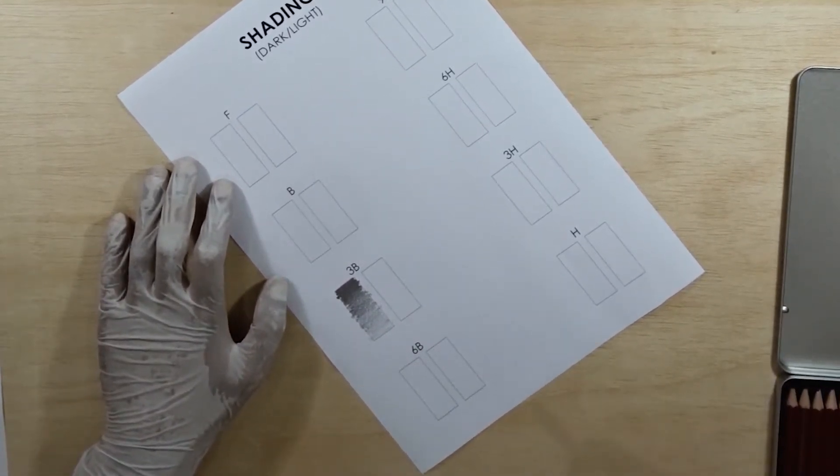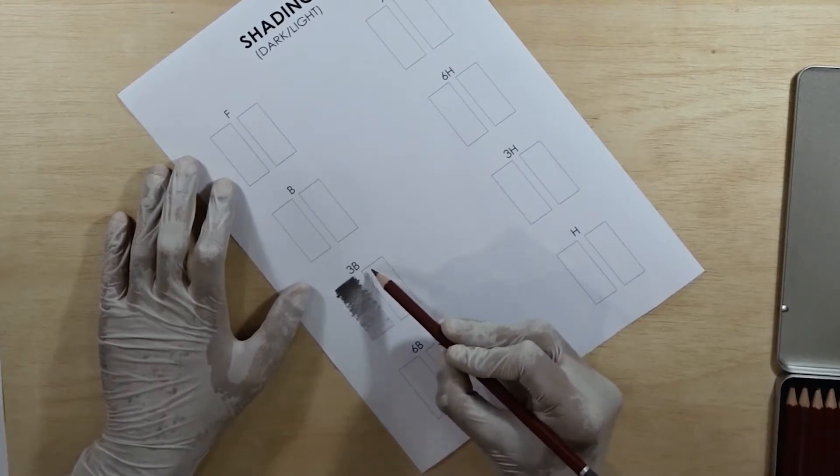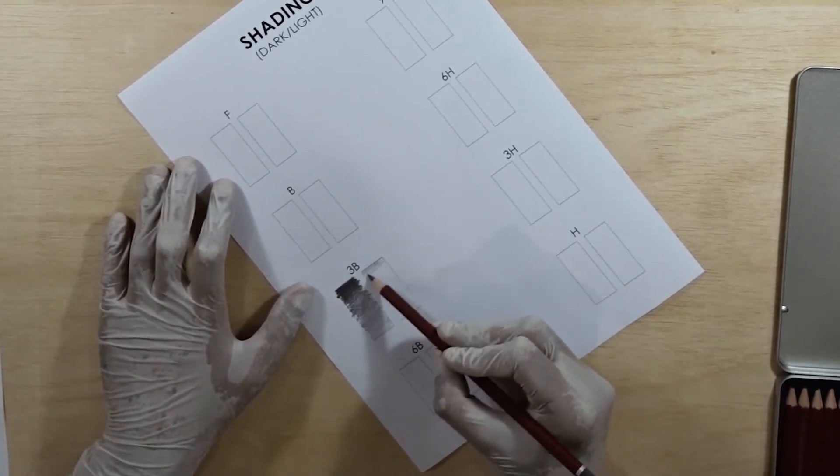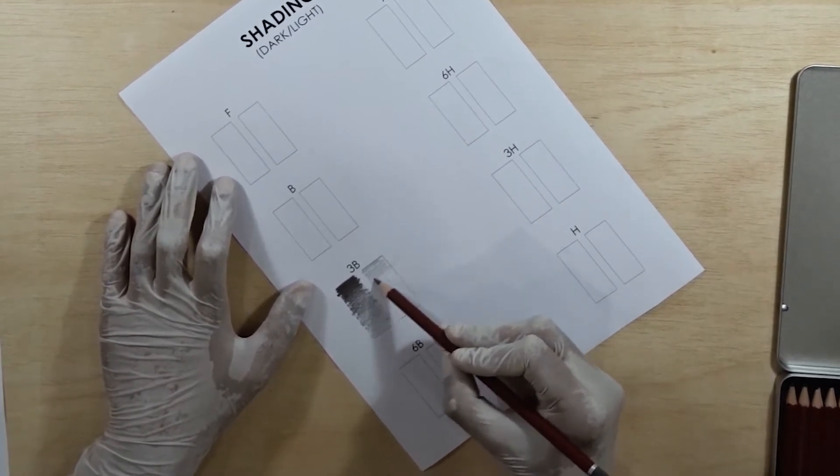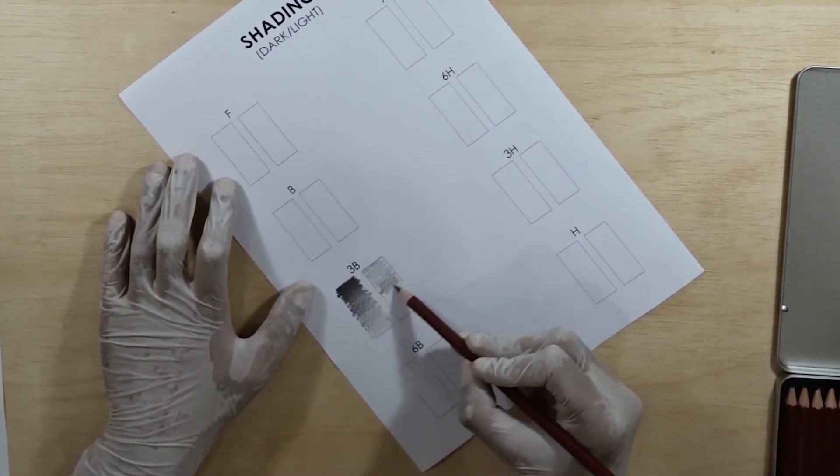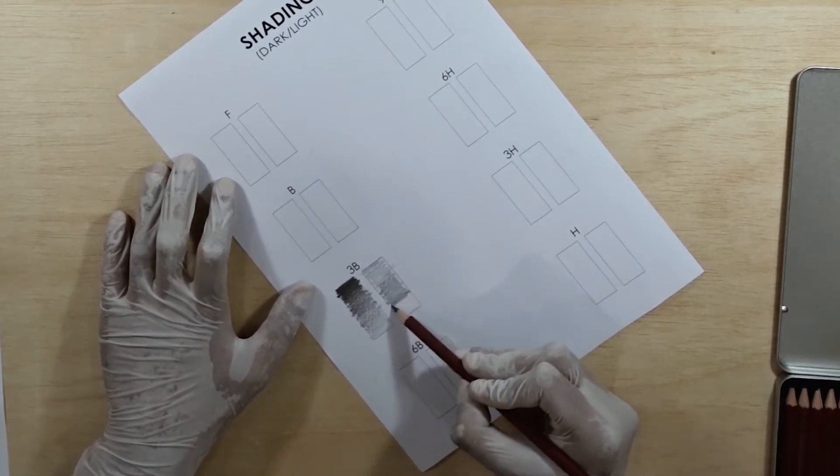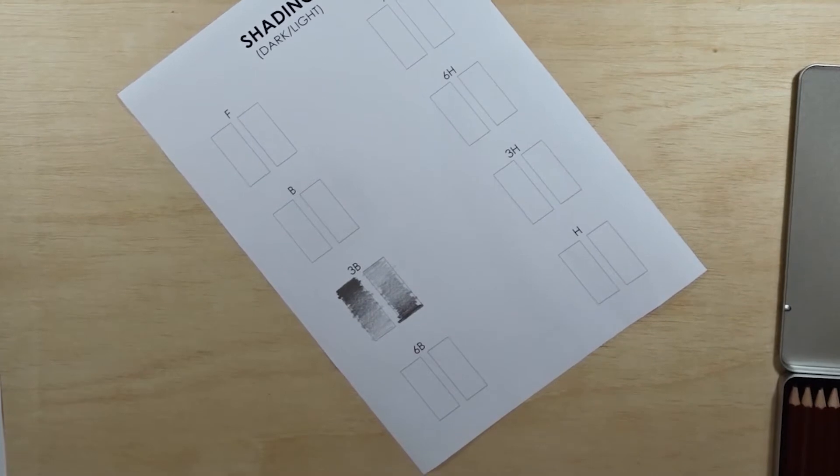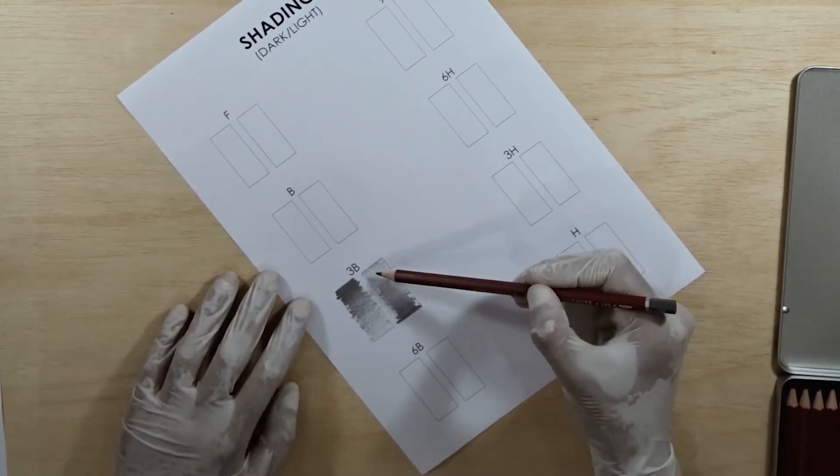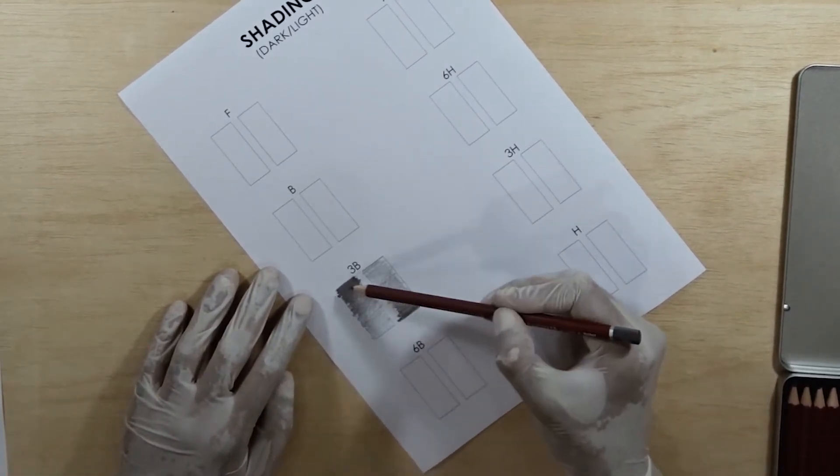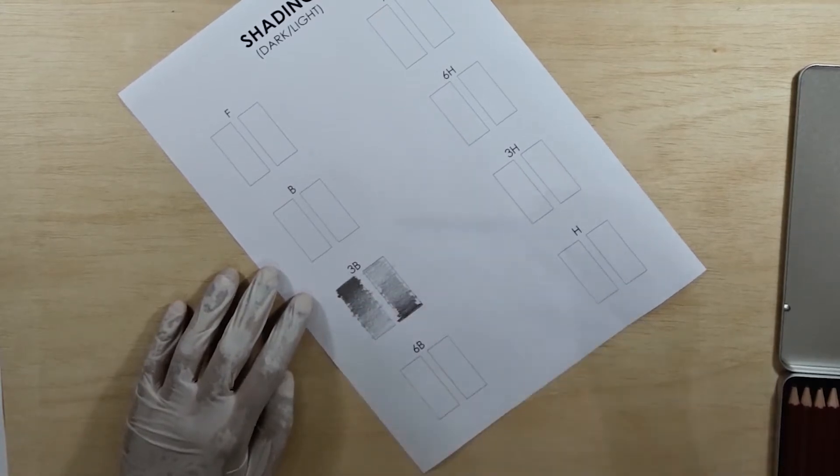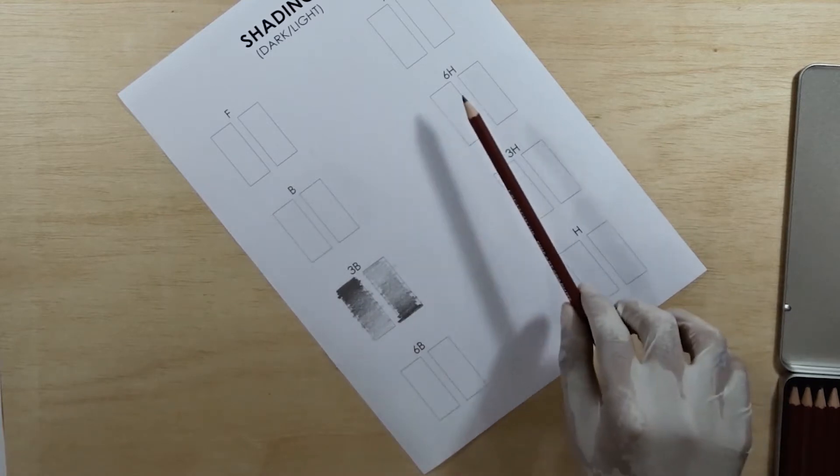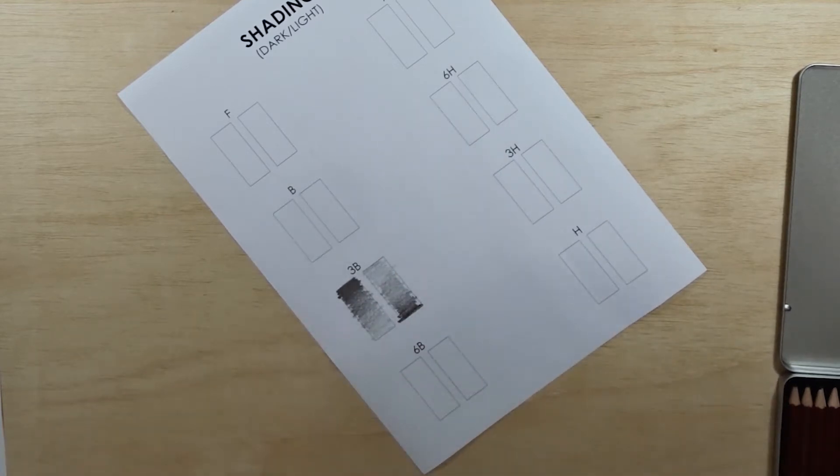So that's how it goes and now we will do it like this. So that's it. You will go from light to dark and then on the left side you will go from dark to light. You will have to do this on each box with the each mentioned pencil here.